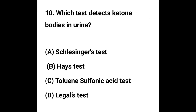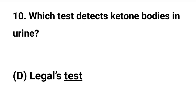Question number 10. Which test detects ketone bodies in urine? Option A - Schlesinger's test, Option B - Hay's test, Option C - Toline sulfonic acid test, Option D - Legal's test. The correct answer is Option D, Legal's test. Legal's test detects ketone bodies in urine.